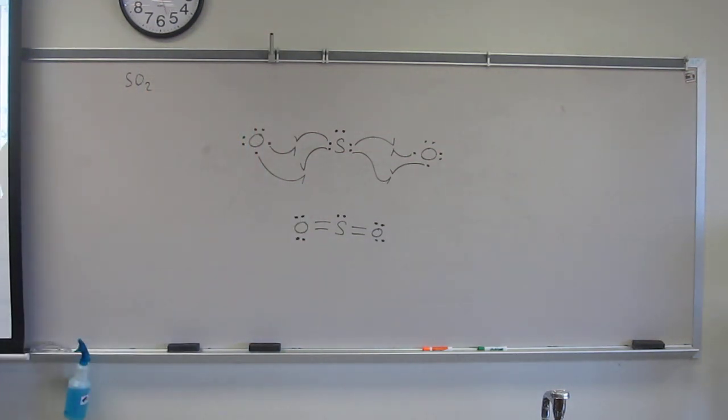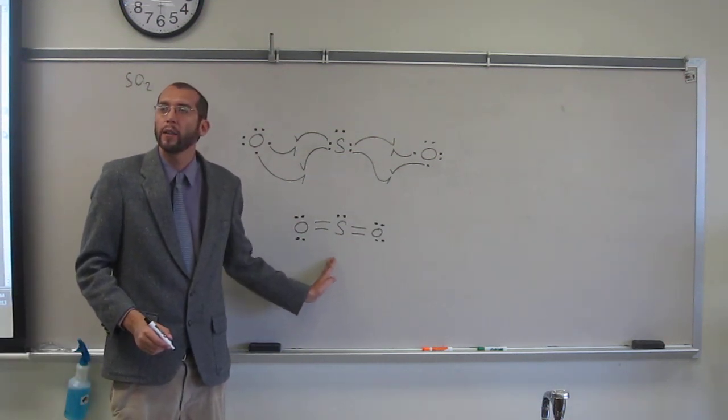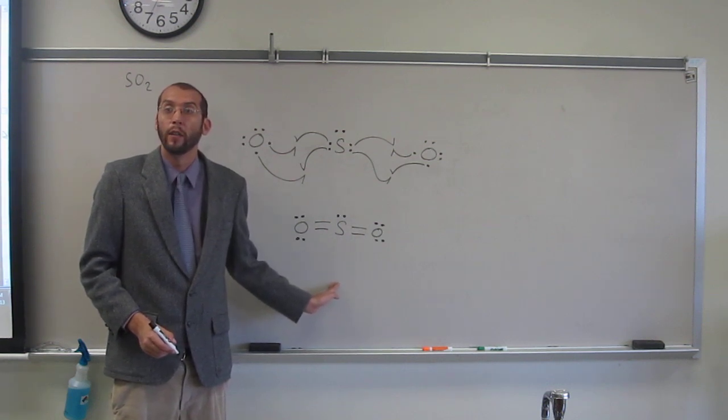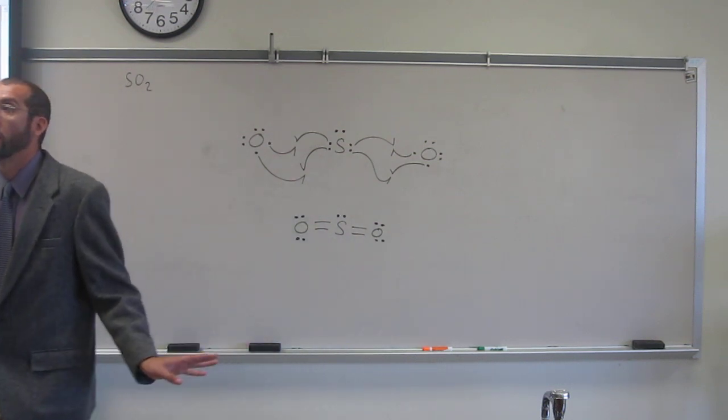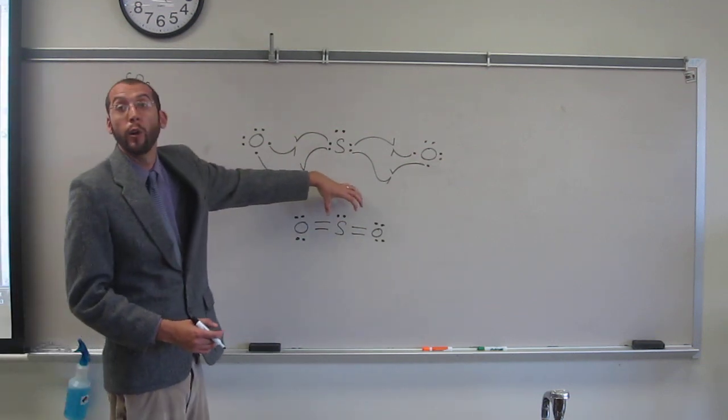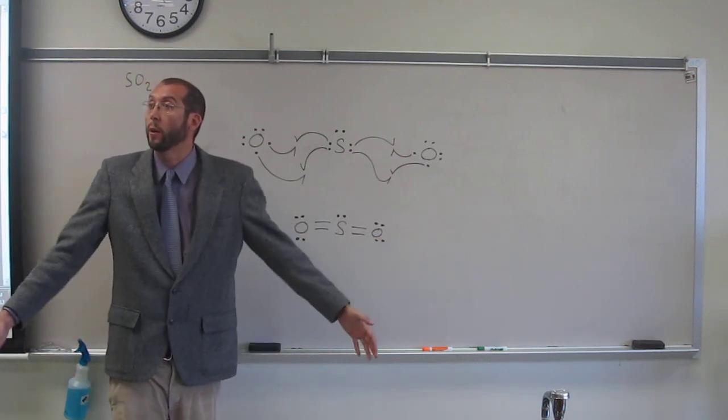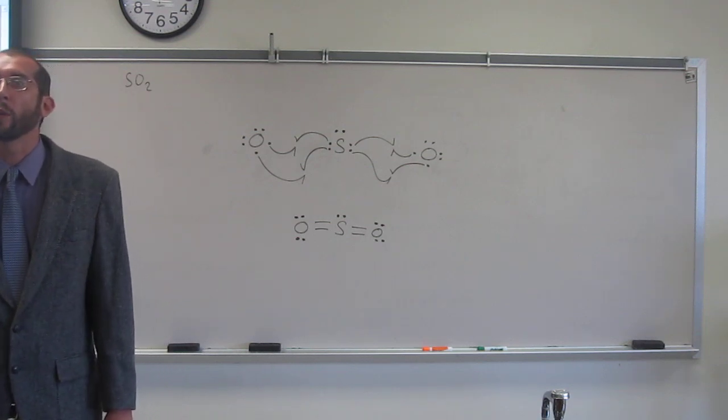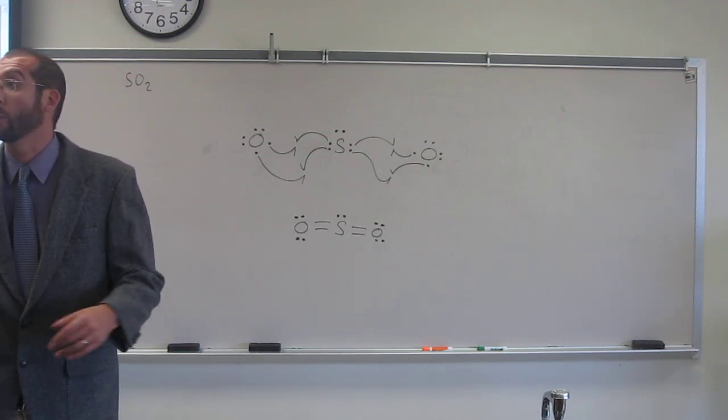So what would we expect the bond angle to be here? Would we expect it to be 180? No, why not? Because we have how many electron groups? Three, right? So what would we expect the bond angle to be? 120 might be a good expectation. In fact, it should be a tiny bit less than 120. Why? Because one of those electron groups is a lone pair, and that kind of squishes the bond angle down. It's not an angle that I want you to remember, but it's something that you want to think about. What should the angle be kind of around? So let's draw what the molecular structure should look like.